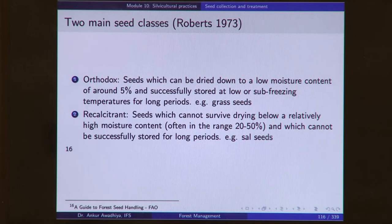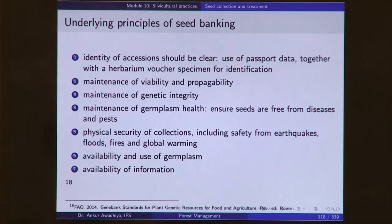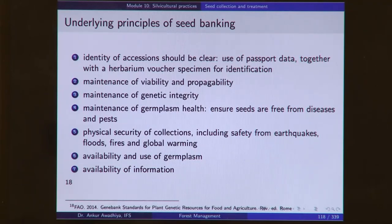It is easy to store orthodox seeds after drying. Factors affecting longevity in storage include seed condition — including seed maturity, mechanical damage, fungi and insects, and initial viability — the age of the seeds, and storage conditions. Typically, the level of oxygen should be kept low, moisture should be kept low, temperature should be kept low, and light should be absent. Underlying principles of seed banking include identification of accession, maintenance of viability and propagability (checked and tested again and again), maintenance of genetic integrity, maintenance of germplasm health, physical security of collections, and availability and use of germplasm and information.